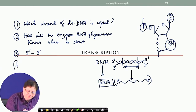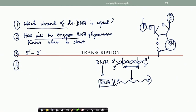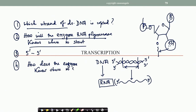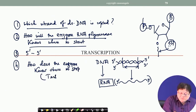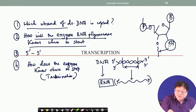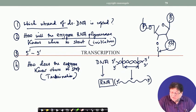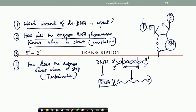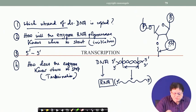The fourth question is: just as there is a problem of where to start, you also have to end at some point. How does the enzyme know where to stop? There should be a termination mechanism and an initiation mechanism. These are the key questions we need to address when describing transcription.